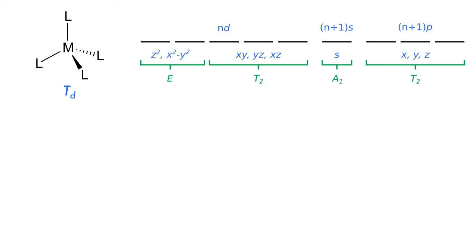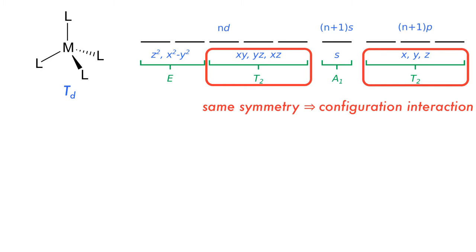The irreducible representations of the metal valence orbitals are obtained directly from the character table. Unlike the octahedral systems, there are now two sets of metal orbitals with the same symmetry which can now mix, which is called configuration interaction.